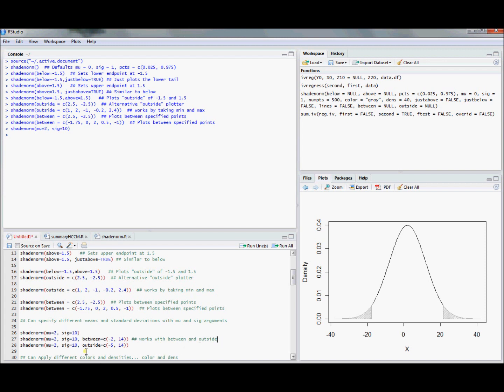In case you were wondering, you can use between, you could use outside, you could use below with just below, you could use below, and all of those would work. Here's an example with between negative 2 and 14. You can see that you plot and you can shade the area between negative 2 and 14. And you can do the same thing with outside, negative 5 and 14 just to show you the graph actually changing.